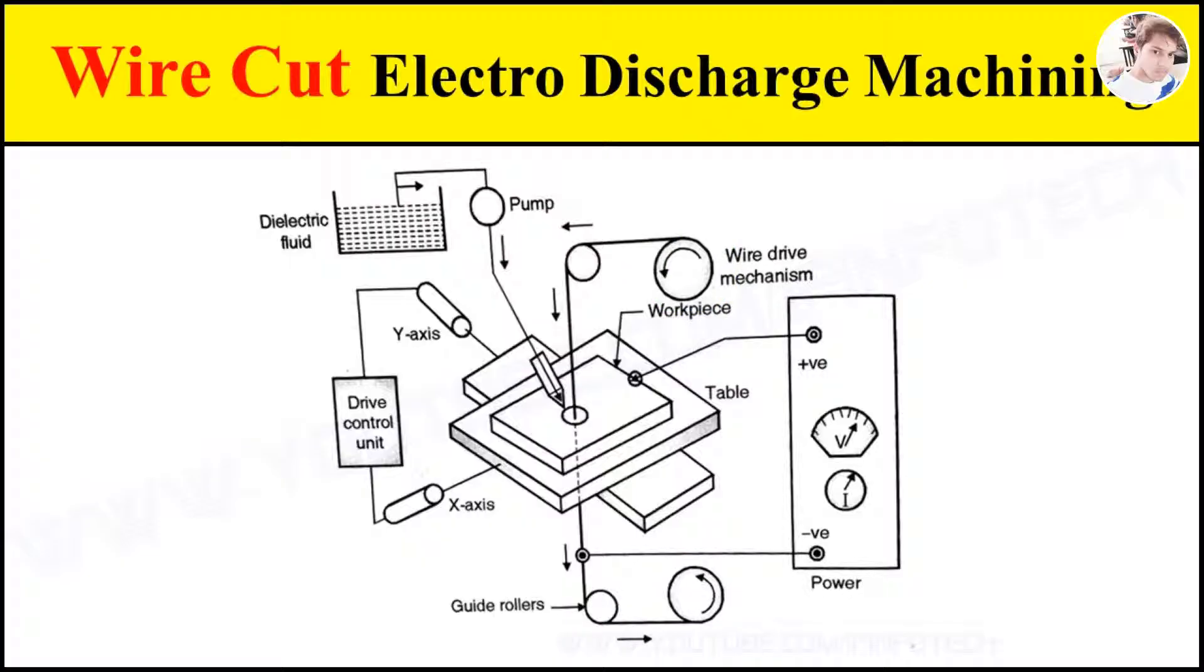This mechanism helps to feed the fresh wire for machining and to put out used wire. The consumption of wire in the electro discharge machining process is about 0.03 kg per hour. The wire electrode is constantly fed during machining, hence its wear is minimum and ignored. The wire is maintained at optimum tension by wire tension control mechanism.